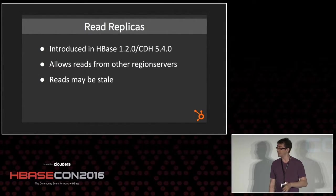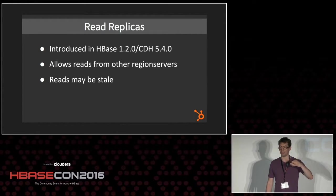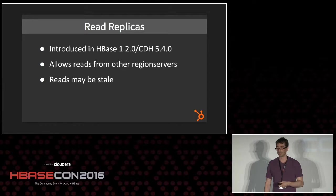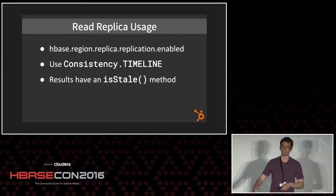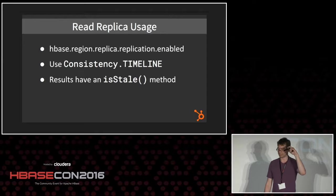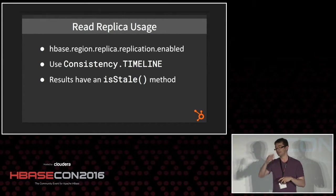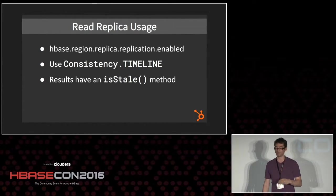One thing we can use to manage risk is read replicas, introduced in HBase 1.2. They allow you to have a primary and then a secondary replica to read from. After a certain timeout, a get request can fail over to a secondary region server rather than reading from the primary — though you might be getting stale reads, which is worth noting. To set that up, you enable replication and set consistency to timeline rather than strong on your get requests. The result object has an isStale() method that tells you whether you got stale results.